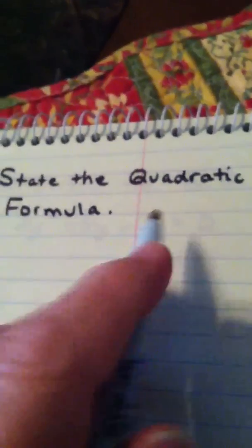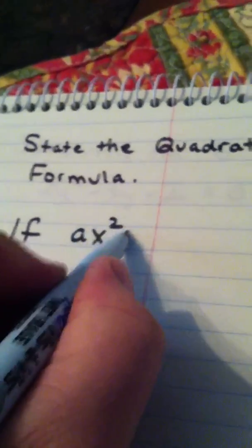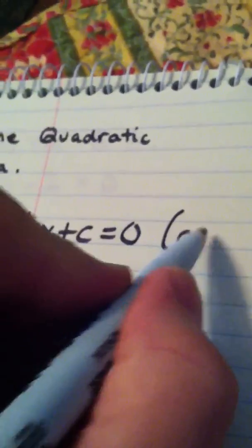But anyhow, the quadratic formula is a fail-safe method and it basically says this. If ax squared plus bx plus c equals 0 and a is not 0.